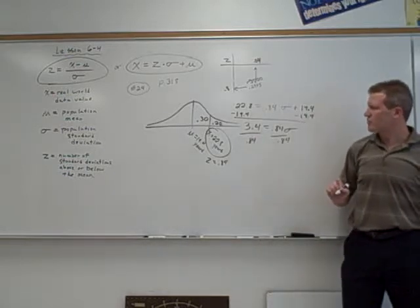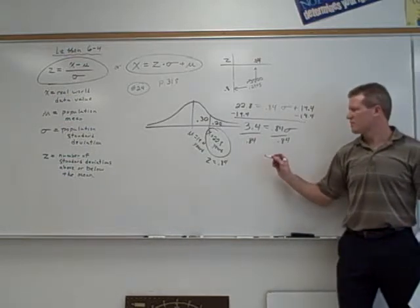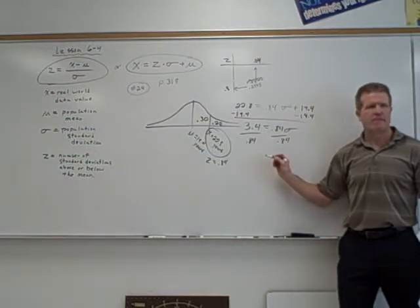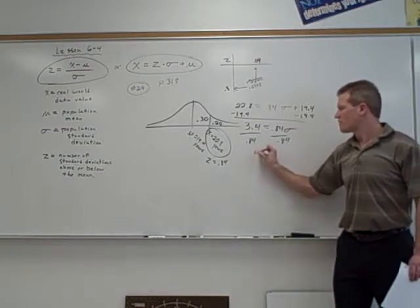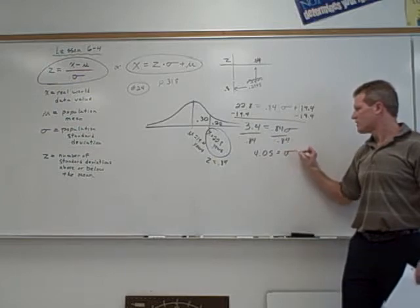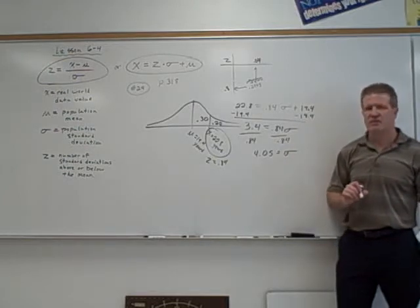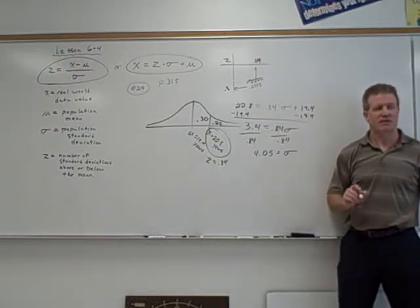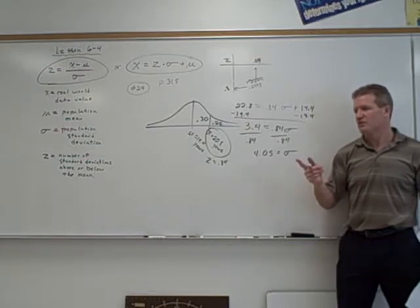Does anybody know what's 3.4 divided by 0.84? 4.04, or 0.05. 4.05. And what do you think the label would be on that? Is it like dollars, minutes, what is it? Years.